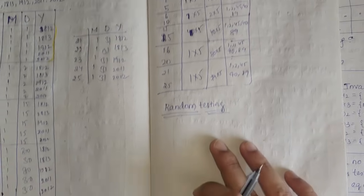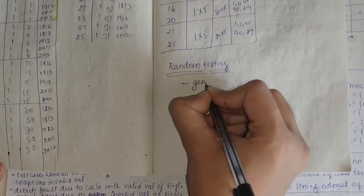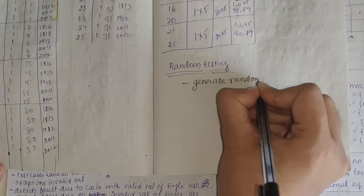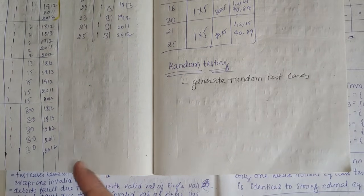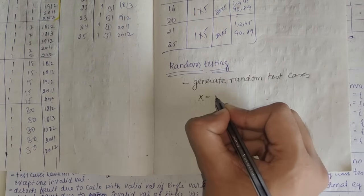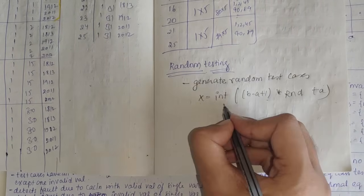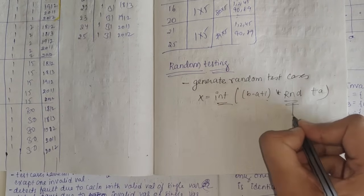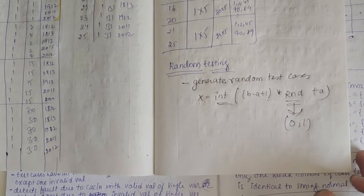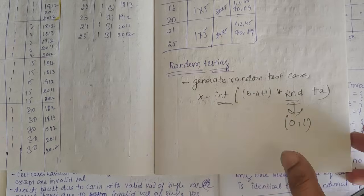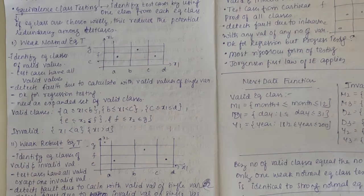In random testing, we generate random test cases rather than choosing limit-based values. The formula is: x = int((b - a + 1) * random + a), where int returns the integer value and random generates a value between 0 and 1. For exam purposes, you can simply consider four or five random values.